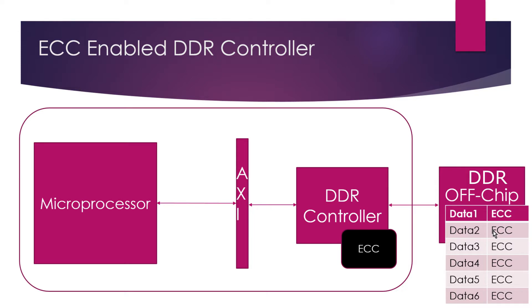In non-ECC mode, the DDR controller does not write any extra bits along with the data. And while reading DDR memory, if there is any error in the data, the DDR controller cannot detect it and the data will be processed as it is.